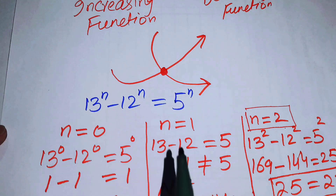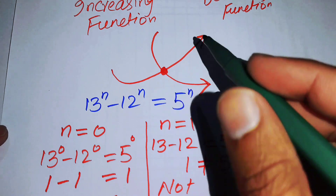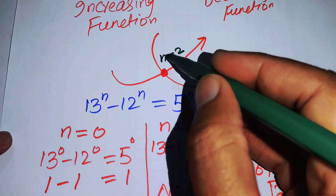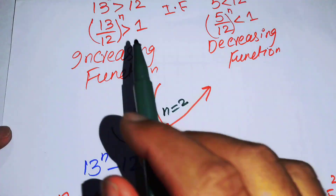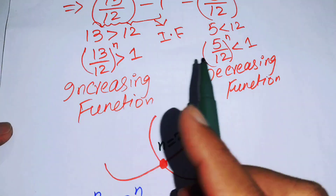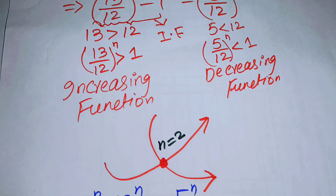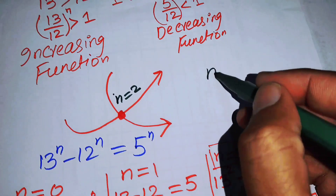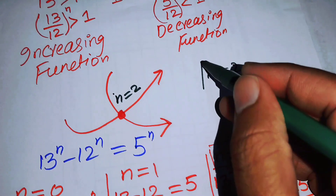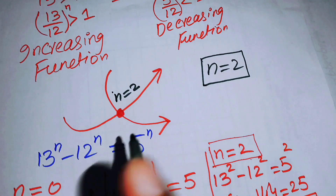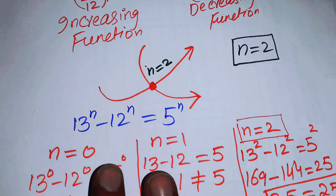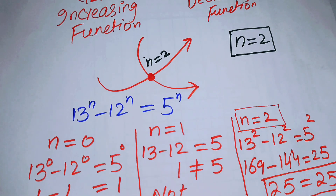This is the unique point of intersection where n = 2. Finally, we conclude that n = 2 is the solution to this problem. Thank you so much for watching this video — please subscribe to my channel for more exciting videos.